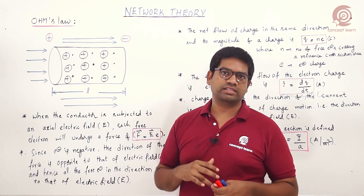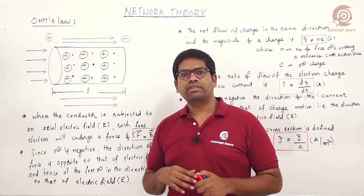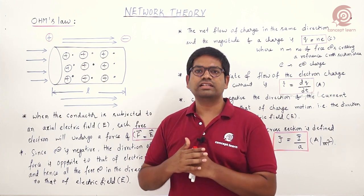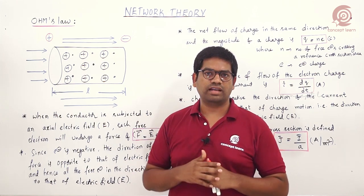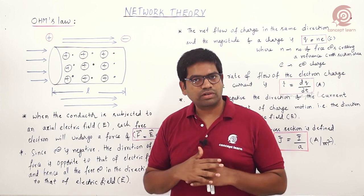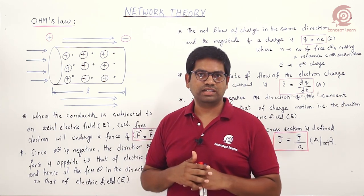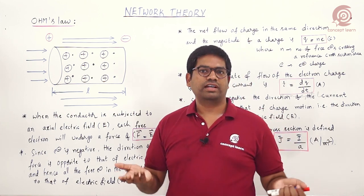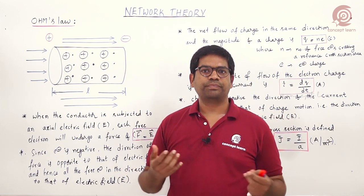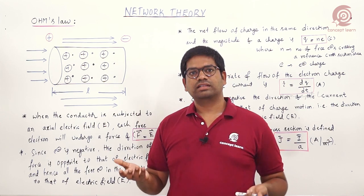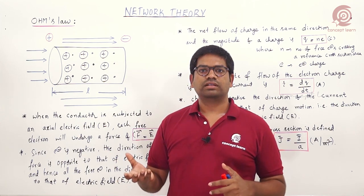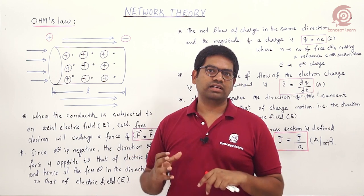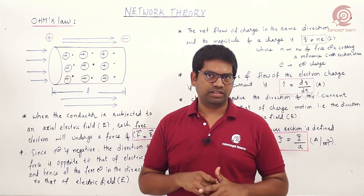Semiconductor examples include silicon, germanium, and gallium arsenide. For insulators, the energy gap is more than three electron volts, so there is no conduction possibility. Examples of insulators include paper, wood, and diamond — diamond being the best example.